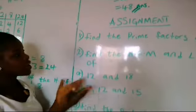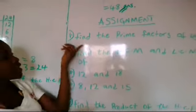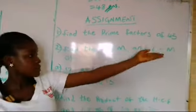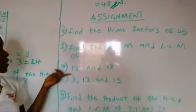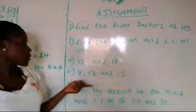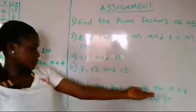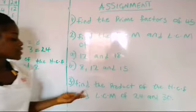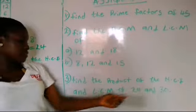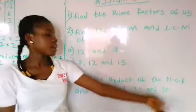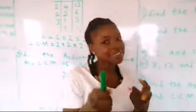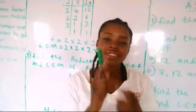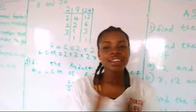I have a little assignment for you. The first one: find the prime factors of 45. The second one: find the HCF and LCM of (a) 8, 12 and 18, and (b) 8, 12 and 15. The third one: find the product of the HCF and LCM of 24 and 13. This is where we come to the end of our class. Like this video, share, and don't forget to subscribe. See you on the next one.